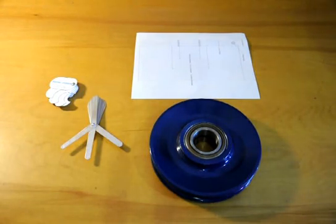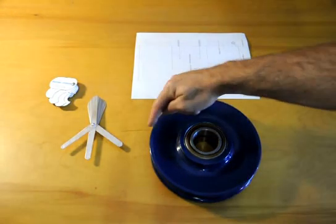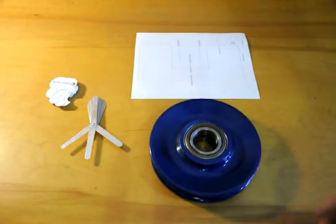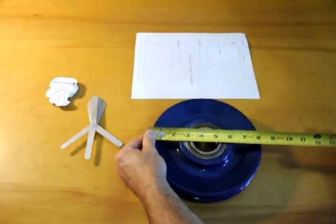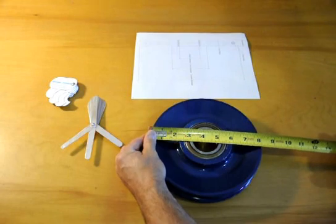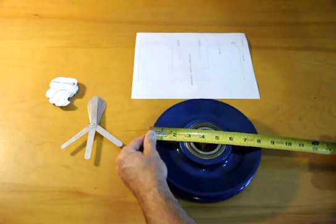First of all you will need the outside diameter and on this shiv as you can see the outside diameter or OD is eight inches.